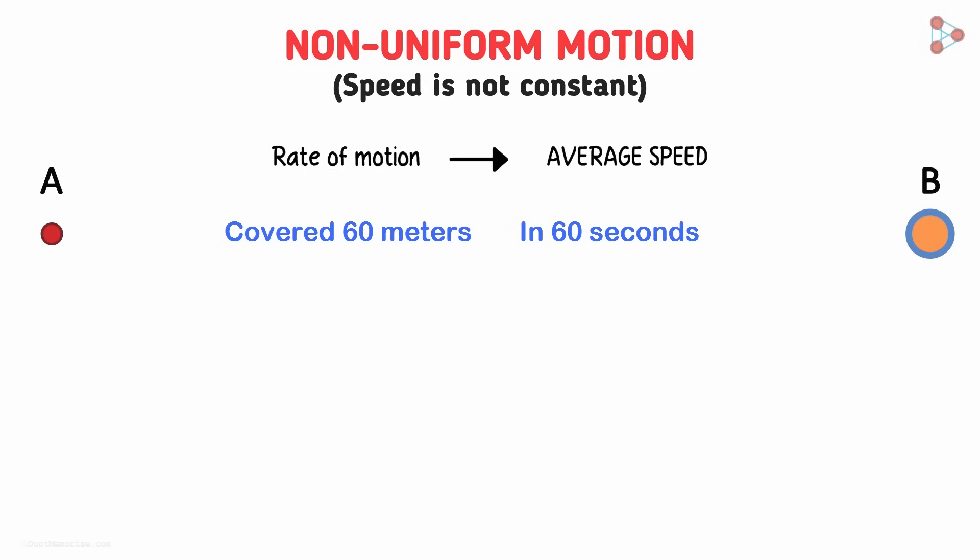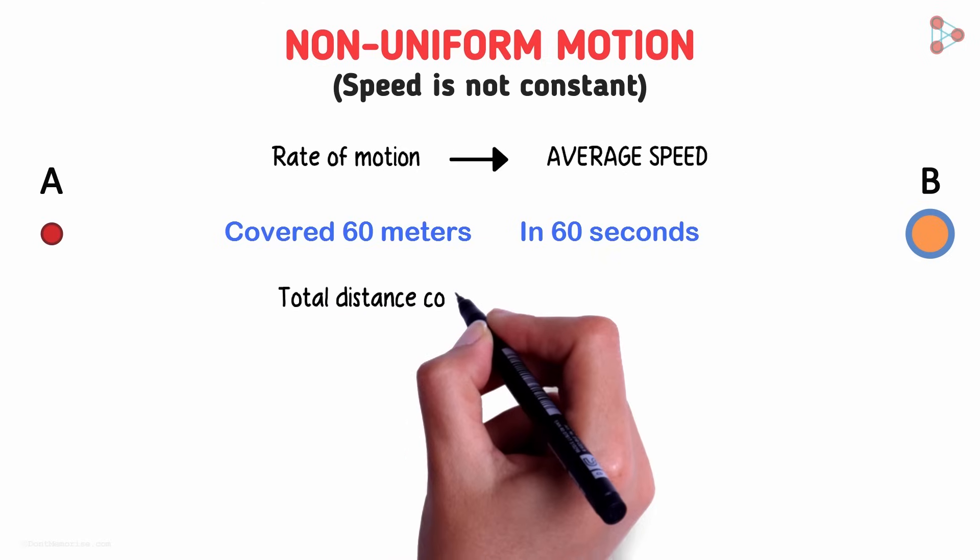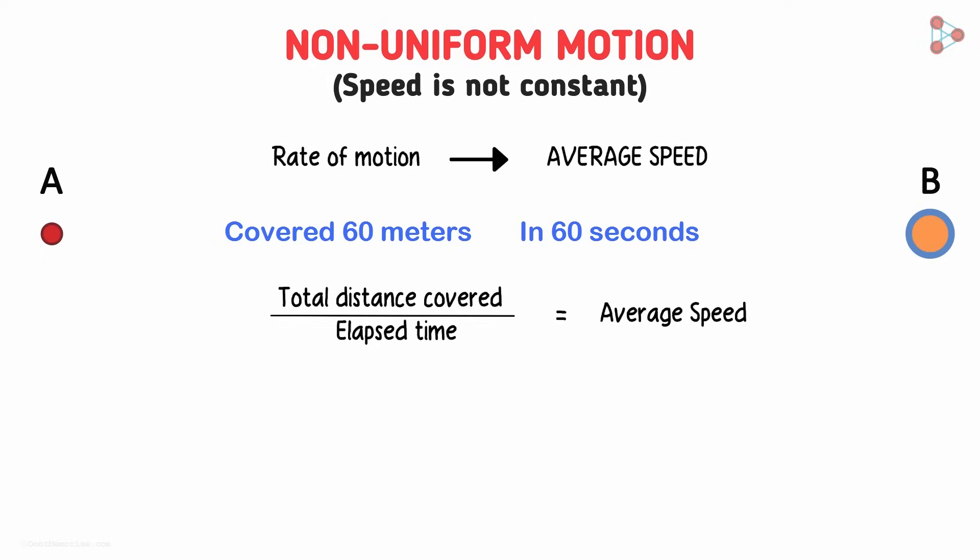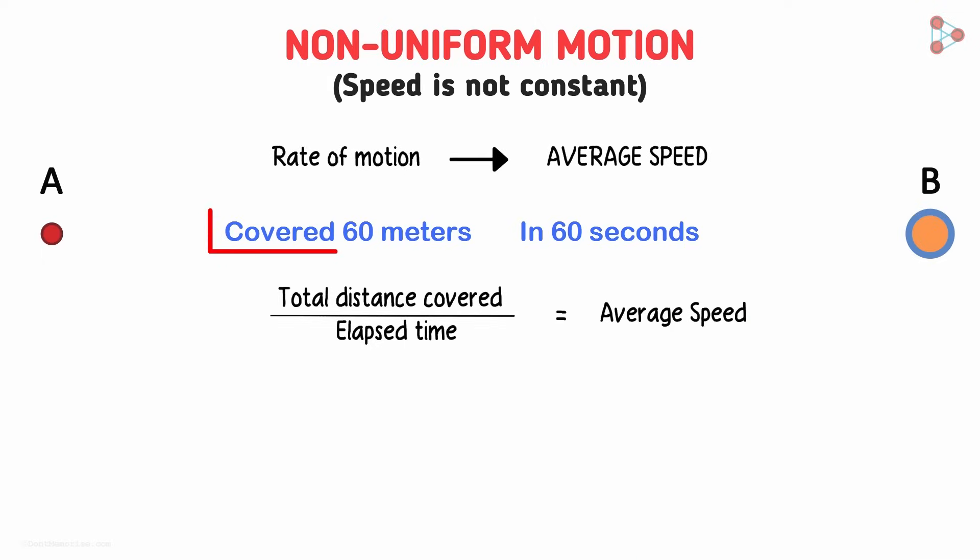You'd have probably guessed. We look at the total distance covered and divide it by the time taken to arrive upon the speed. So this boy has covered 60 meters in 60 seconds. So 60 divided by 60 equals 1 meter per second. That's his average speed over this distance. It is as simple as that.